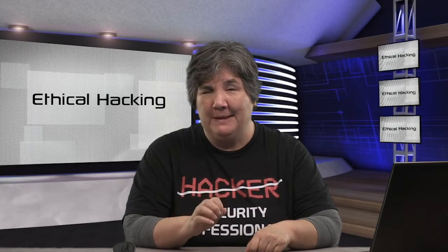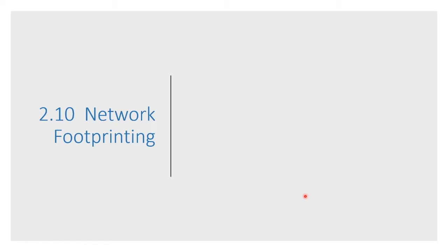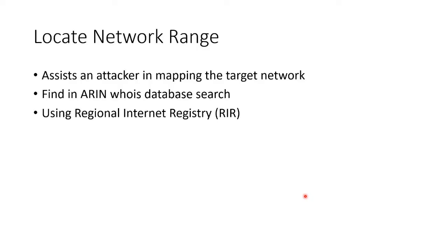There's additional information we can use to footprint the network. We've already looked up IP addresses and contact information about the people who run the network. We can also locate ranges of addresses, which helps us map the target network. WHOIS will help us find whole ranges of addresses, assuming they have them — not everybody does. We can use ARIN, the Americas registry, or the regional internet registry if they are not in North America.